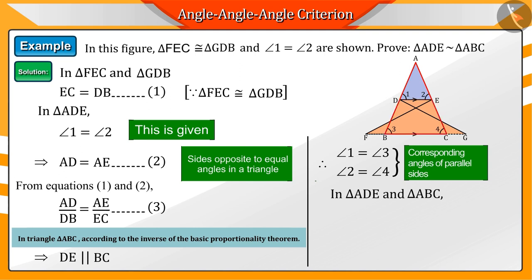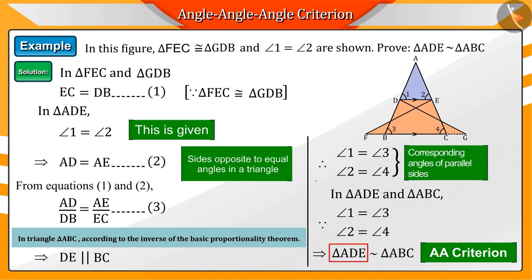In triangles ADE and ABC, angles 1 and angle 3 and angles 2 and angle 4 are equal. Hence, by the AA criteria, triangles ADE and ABC become similar.